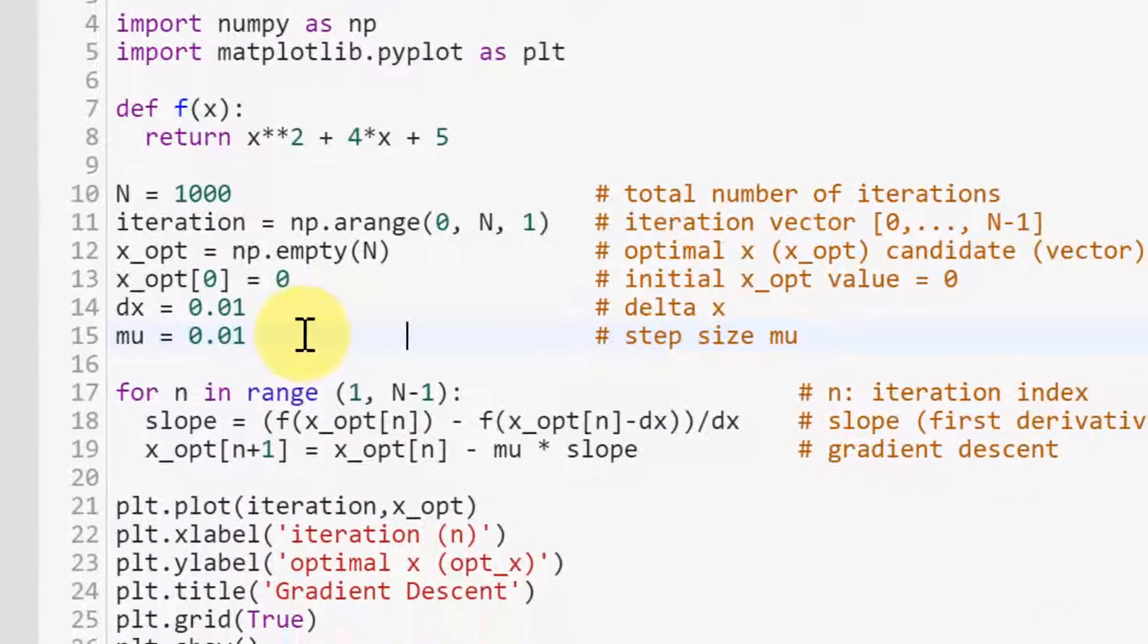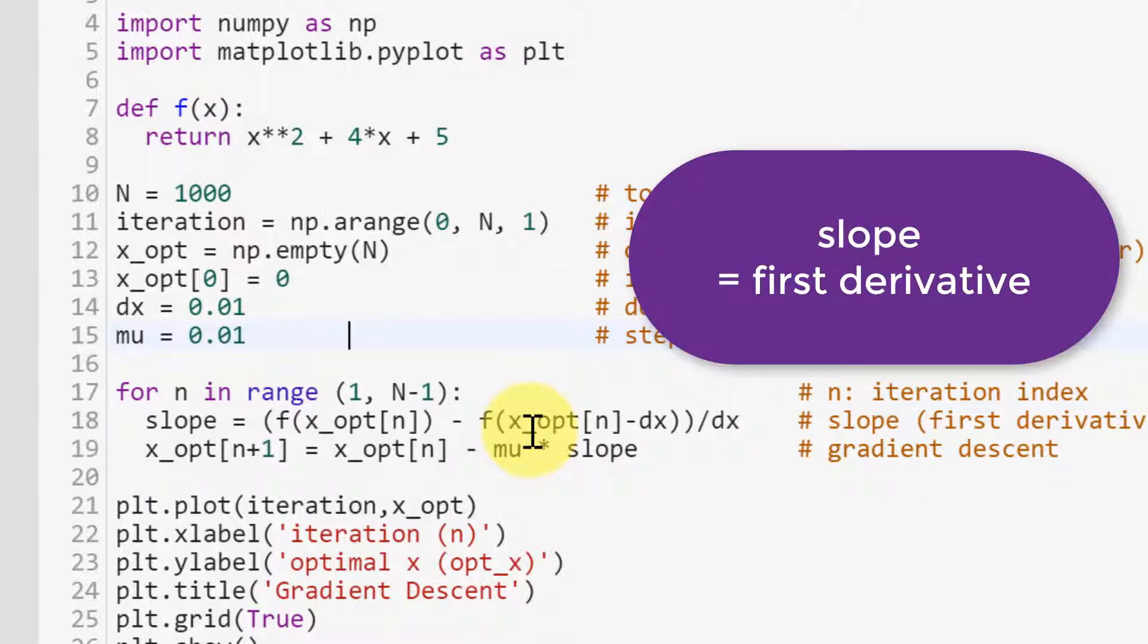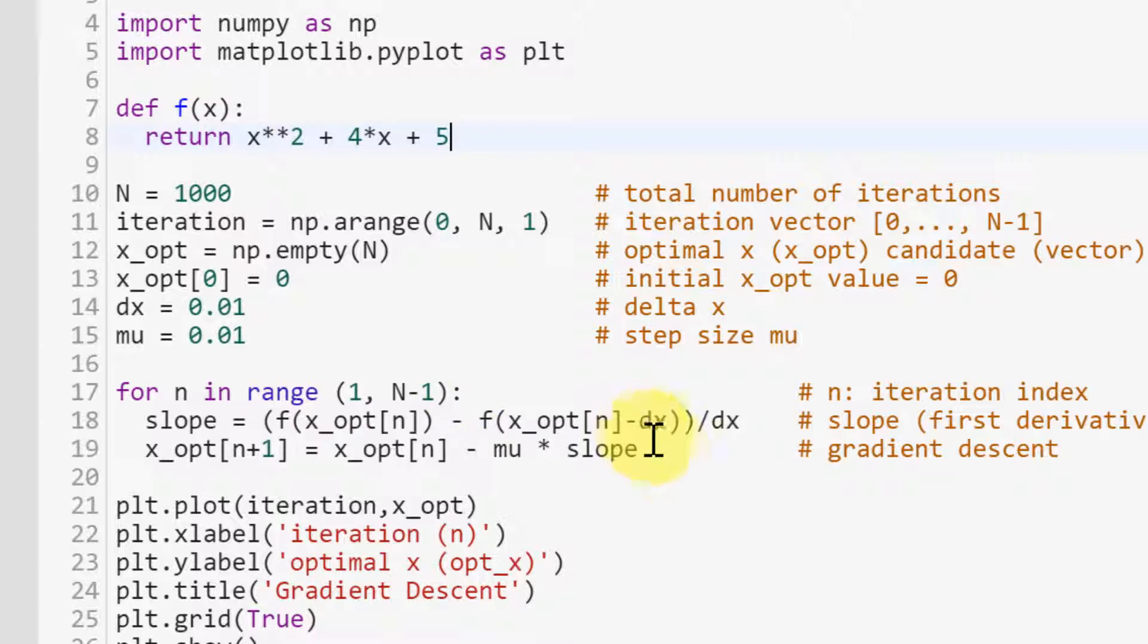And x_opt is optimal x candidate, and this is also a vector. The first candidate value is 0. And dx is a delta x, which is used to find the slope or the first derivative. And mu is the step size.